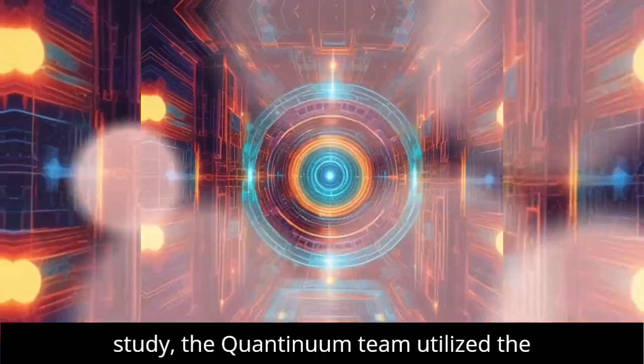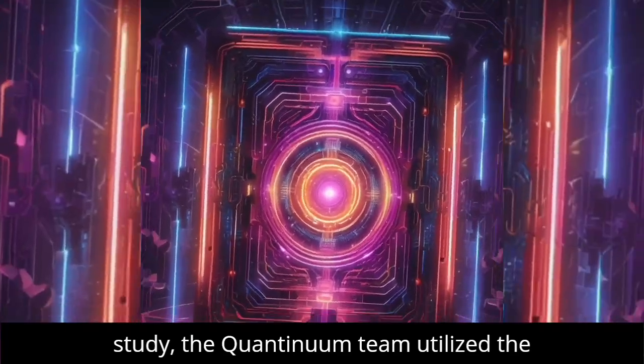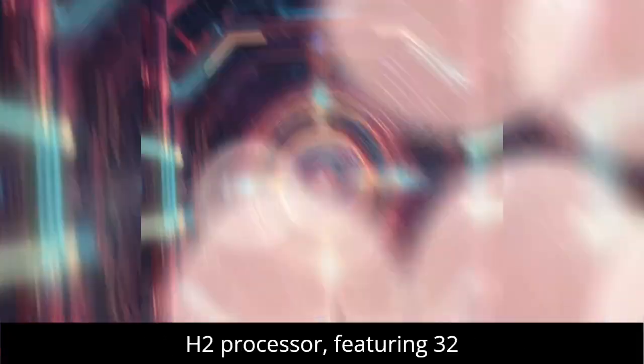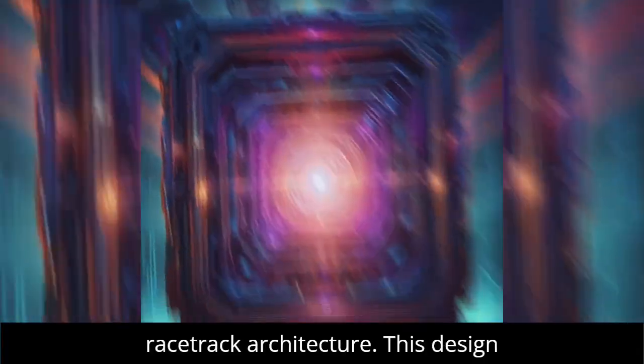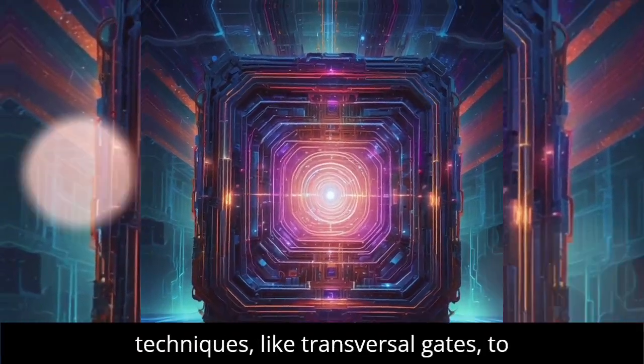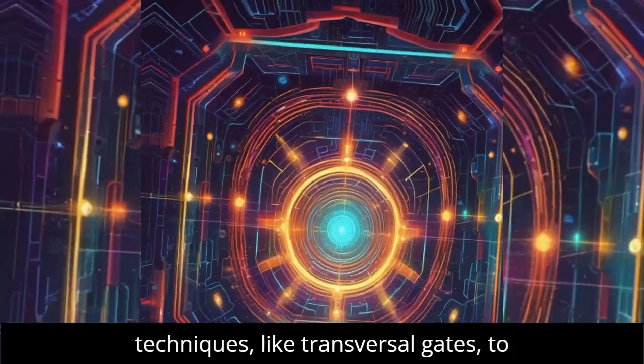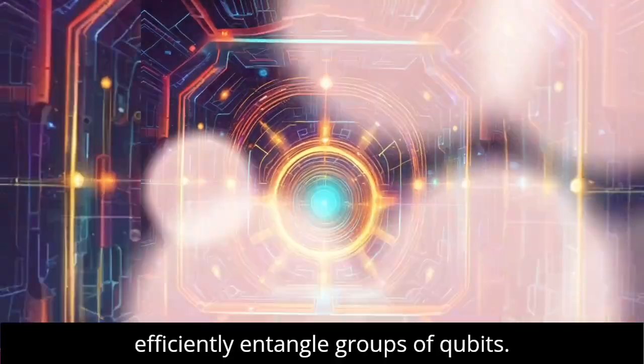In their recent study, the Continuum team utilized the H2 processor, featuring 32 trapped ion qubits arranged in a racetrack architecture. This design allowed them to implement advanced techniques, like transversal gates, to efficiently entangle groups of qubits.